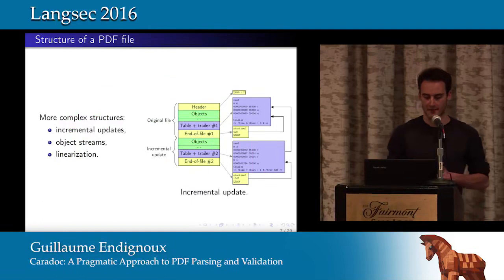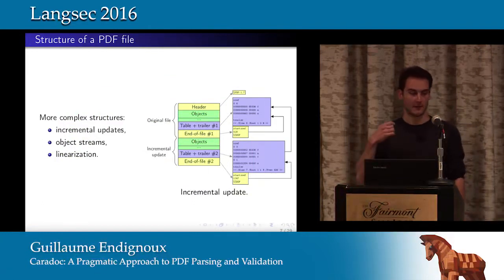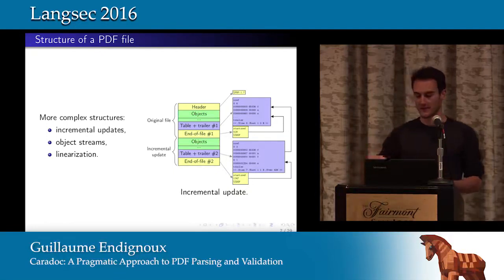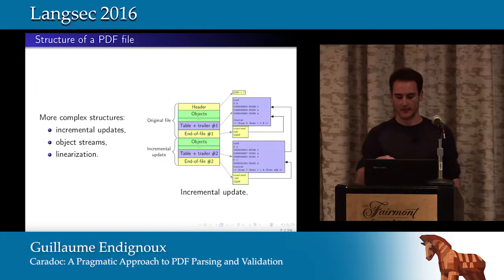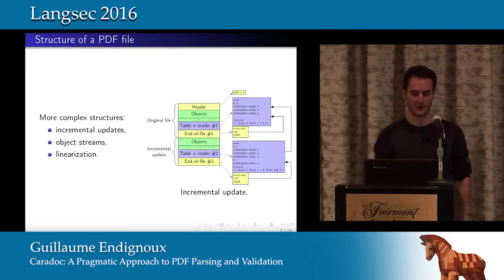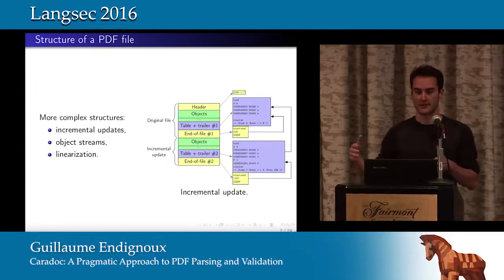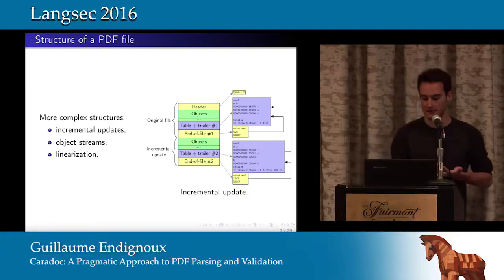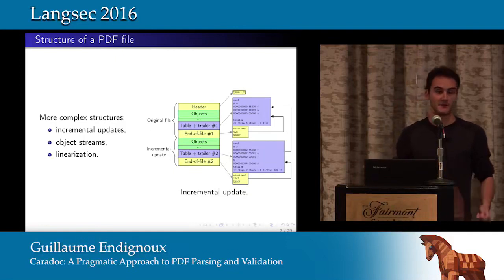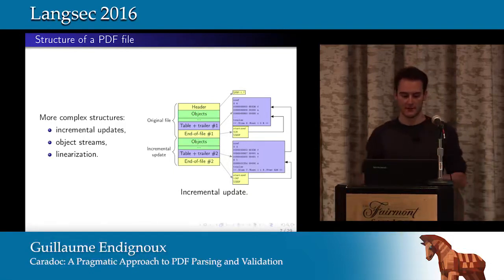With later versions of the format, more complex structures were introduced. For example, incremental updates: if we want to update a file, we can append new objects describing the modification, a new table, and a new end-of-file referencing them. There is also object streams — encapsulating objects inside a compressed stream to reduce file size. And linearization, used to deliver a PDF over a network, providing a hybrid structure where the first object acts as a table to display content during downloading.